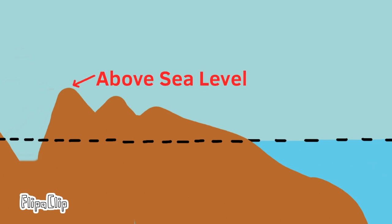This mountaintop represents an elevation which would be above sea level. And the valley floor represents an elevation that would be below sea level.